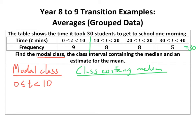Up to the first group we have 15 people, and up to the next group we have 17 people, so we've now passed halfway. Therefore the class containing the median is that second group — the median is in there somewhere. In Year 11 you might be asked to estimate exactly where the median is, but for now we just need to identify the class.